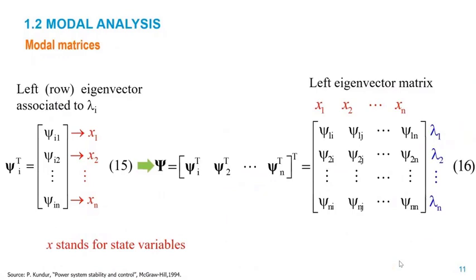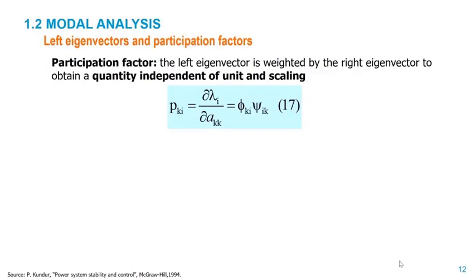For the left eigenvectors, they also have entries related to the order of the system or number of eigenvalues, with the same sequence as the right eigenvectors related to the state equations. We also have a matrix of left eigenvectors; since they are row eigenvectors, the matrix uses a transpose representation. By taking entries of the left and right eigenvectors and multiplying them, we get the so-called participation factors — a dimensionless unit that measures the extent of participation of a given state in a given oscillatory mode. They can also be viewed as the sensitivity of the eigenvalue to a diagonal element of the state matrix.